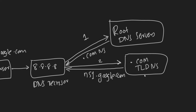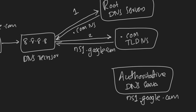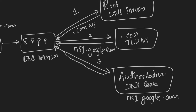Now our resolver knows where to ask for www.google.com. The TLD name server leads to the authoritative DNS server, which in this case is ns1.google.com. Our resolver makes a request to ns1.google.com, and because this is an authoritative DNS server, it actually has the DNS entry for www.google.com and responds with the IP address.